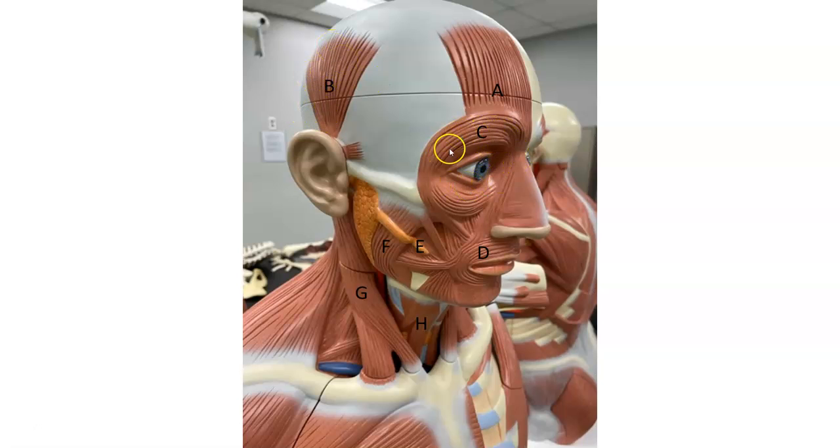This muscle around the eye, C is the orbicularis oculi. This muscle around your mouth, the form of a circle around the mouth, is orbicularis oris, that's D.